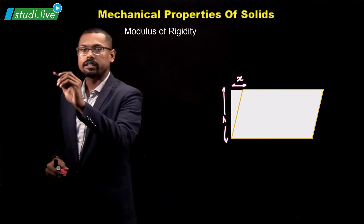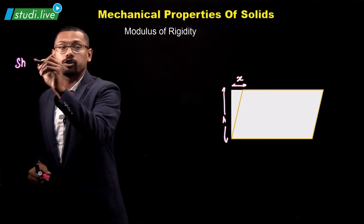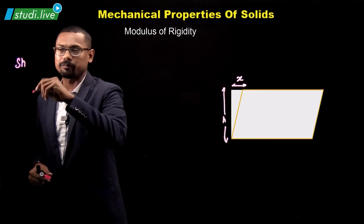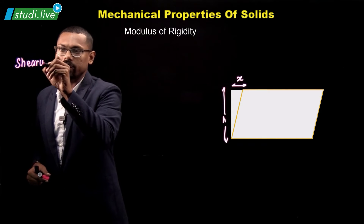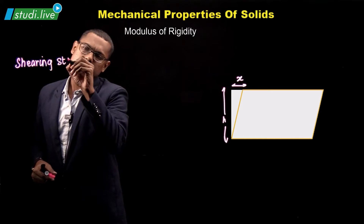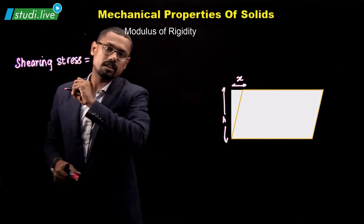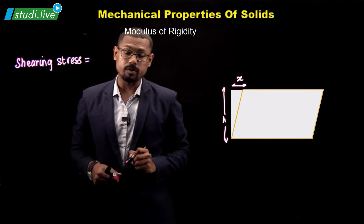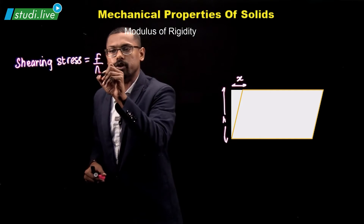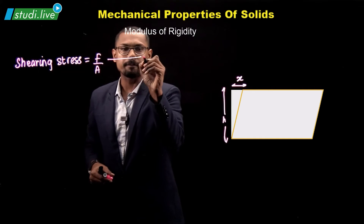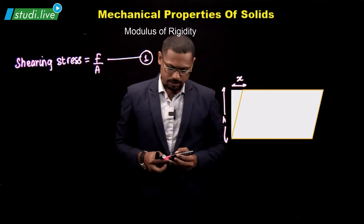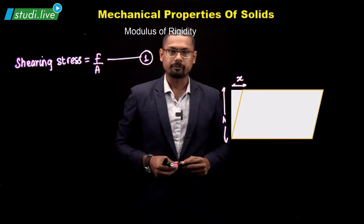Let's start working on the expressions needed to find modulus of rigidity. The very first is shearing stress. Shearing stress is force acting per unit area. Mark it down as equation number one.